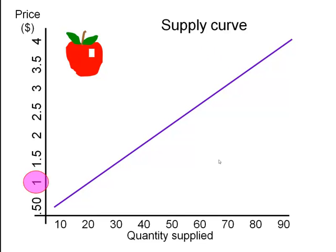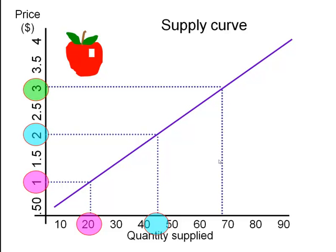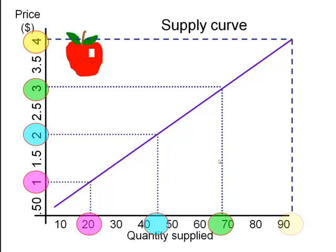If the price of apples is $1, how many apples will our farmers supply? The curve shows us that at $1, 20 apples will be supplied. If the price is $2, our farmers would be prepared to supply something like 45 apples. At a price of $3, our farmers will supply approximately 70 apples. And if the price were to get as high as $4, our farmers would likely supply somewhat more than 90 apples.